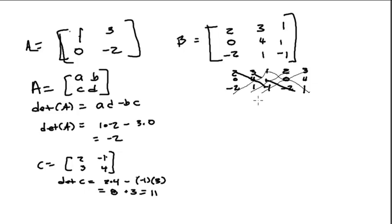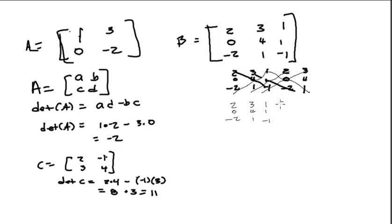I covered up what I wrote before, so I'm going to write it again. So the matrix is [2, 0, -2 / 3, 4, 1 / 1, 1, -1], and then I copy the first two columns over again: 2, 0, -2, 3, 4, 1.